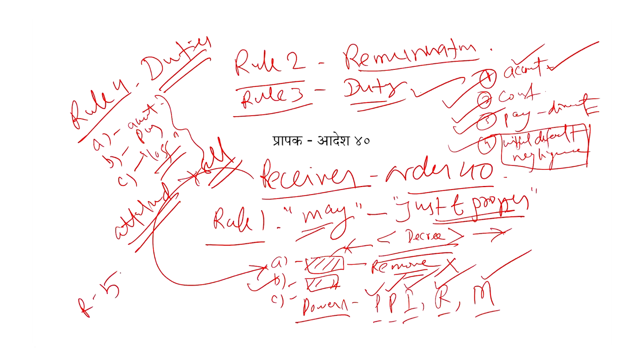Rule 3 aur Rule 4 ek saath chalta hai — iski duty hai, duty ka enforcement hai. Rule 3 aur Rule 4. Lastly Rule 5: Rule 5 kya bolta hai — Rule 5 bolta hai ki when collector mein bhi appointed as receiver. Toh kabhi kabhi na collector jo hota hai, jo revenue officer hota hai — ek tariqe se district ka — toh collector bhi kabhi kabhi receiver appoint hota hai. Kis property ke liye? Woh property jo land revenue pe karti hai — land revenue. Jo property land revenue ke liye liable hai, us property ke liye collector mein bhi appointed as receiver. Us mein receiver collector koi appoint kar diya ja sakta hai. Toh yeh hai ki kab collector receiver appoint hoga — un property ke liye jo land revenue pe karti hain, un ke liye collector receiver appoint ho sakta hai.